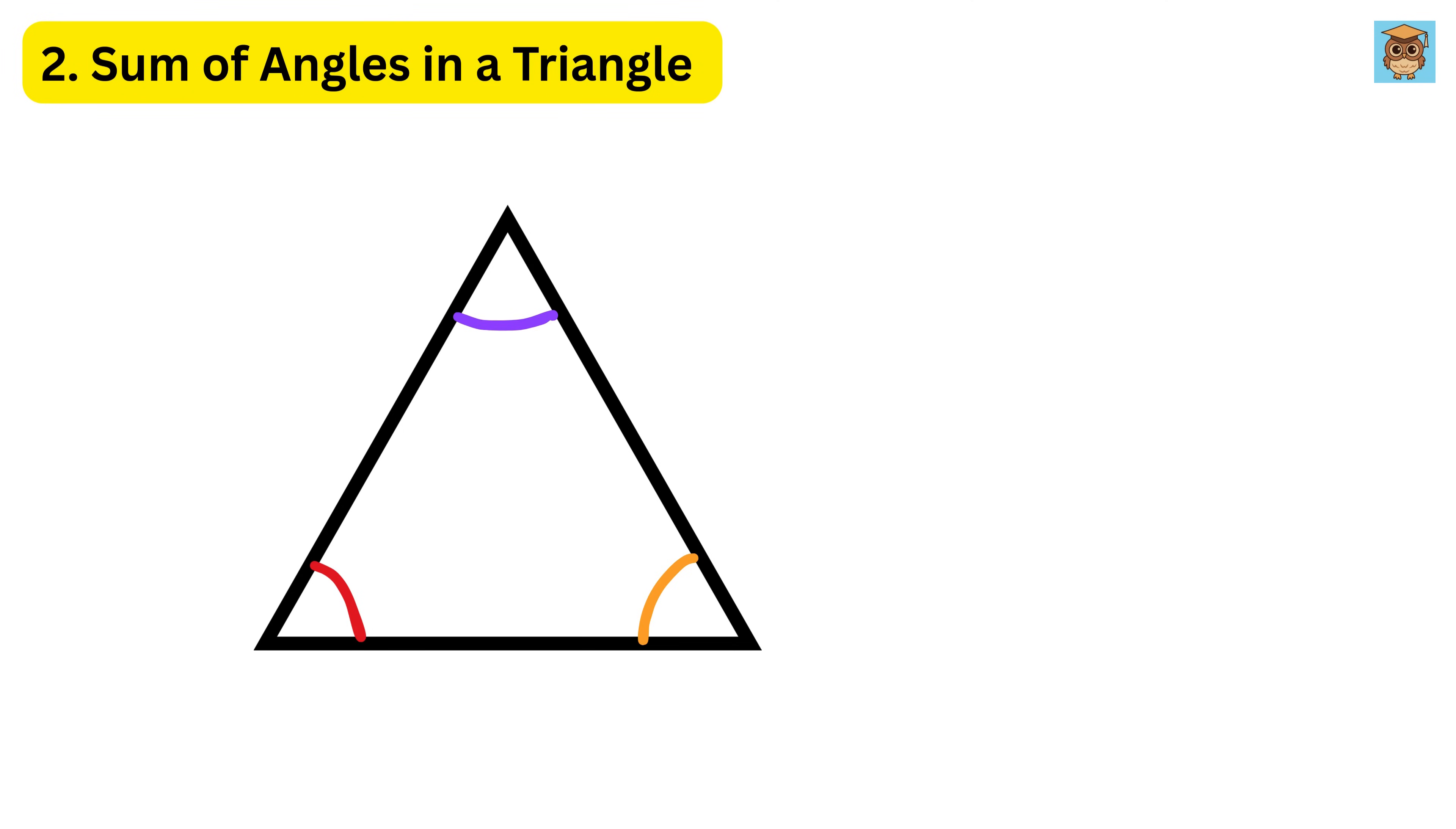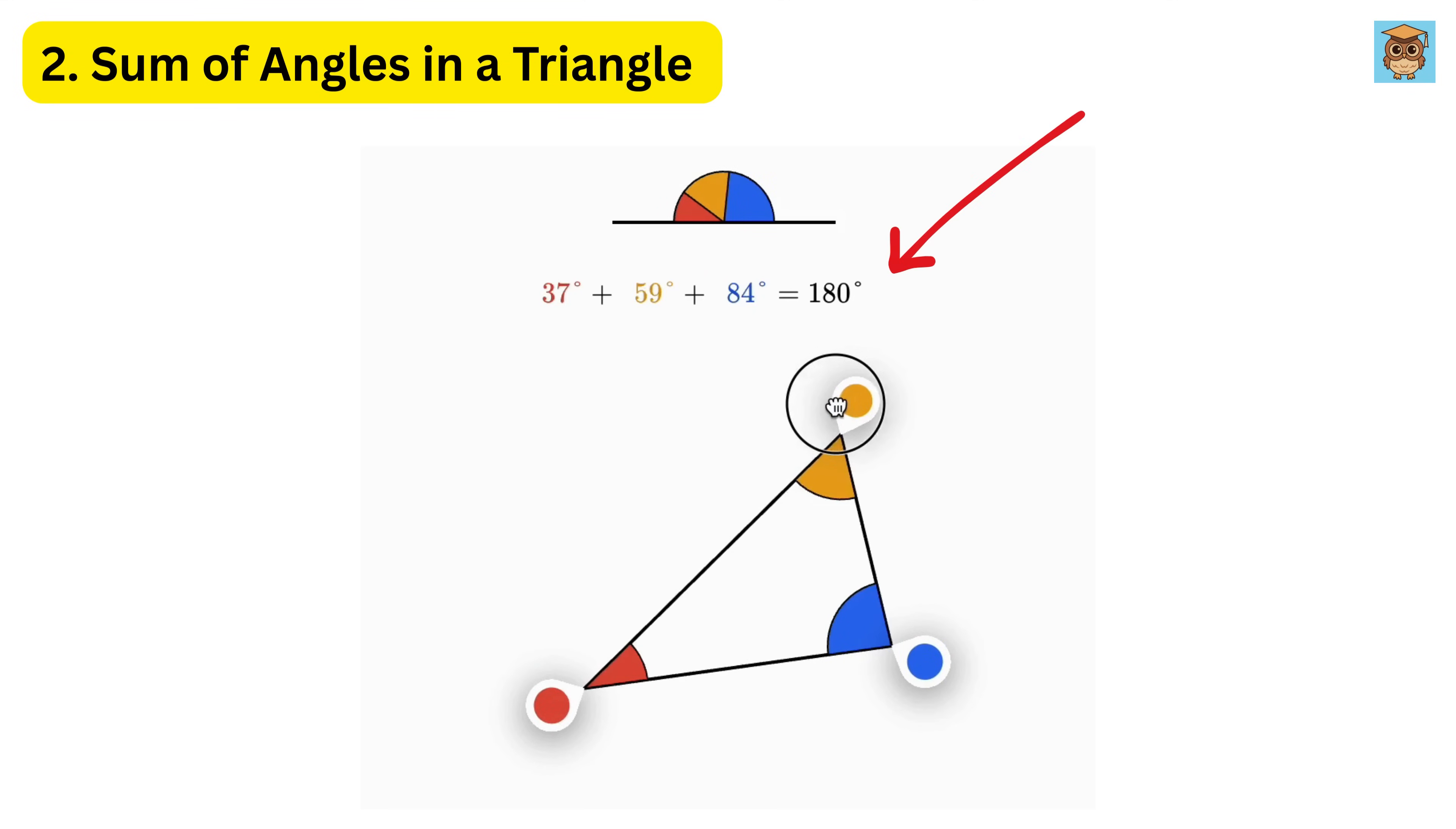2. Sum of Angles in a Triangle. A special rule about triangles is that if you add up all the angles inside a triangle, the total will always be 180 degrees. This works for every triangle, no matter how big or small, skinny or fat. It's like a magic rule of triangles.